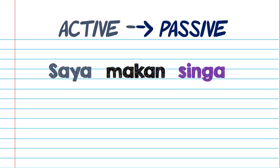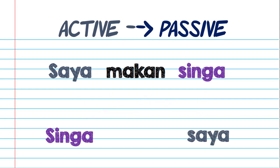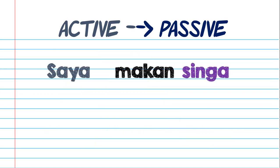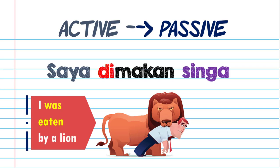If you want to make this sentence passive, we have to put the object in front of the sentence and the subject behind. So the sentence will be 'singa dimakan saya,' which means 'the lion was eaten by me.' If we say 'saya dimakan singa,' it means 'I was eaten by a lion.'